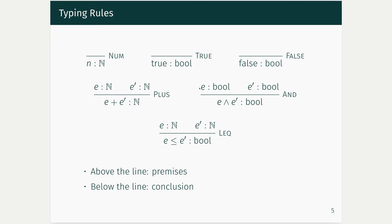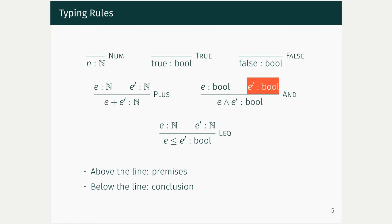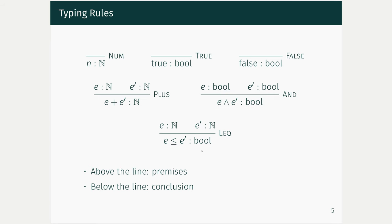Similarly for booleans: if I have a tree telling me that E is a boolean and a tree telling me that E prime is a boolean, then I can use the AND rule to build a bigger tree that tells me that E and E prime is a boolean. The bottom of the tree gives you the conclusion — the type for your whole program — and above the line are the premises. As long as the premises are met, we're allowed to form the conclusion.